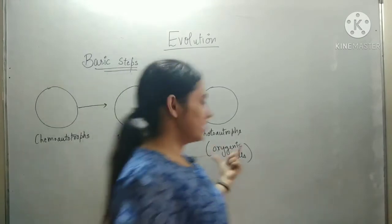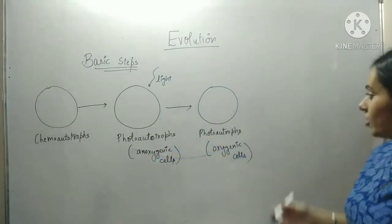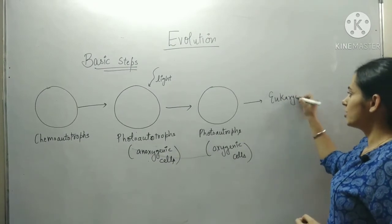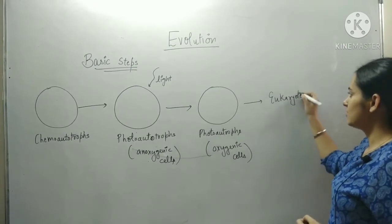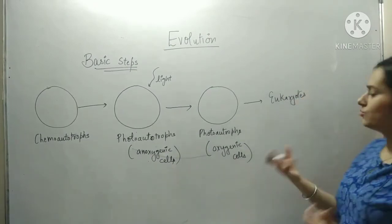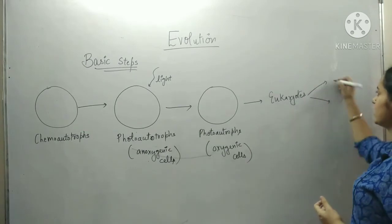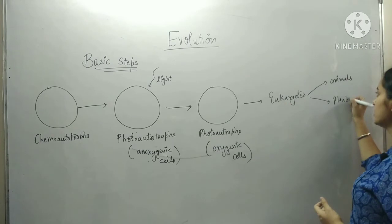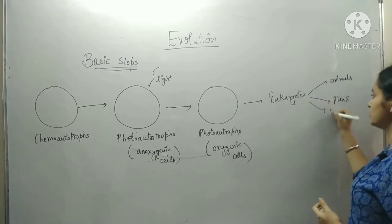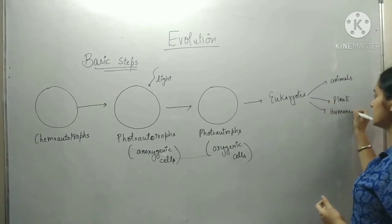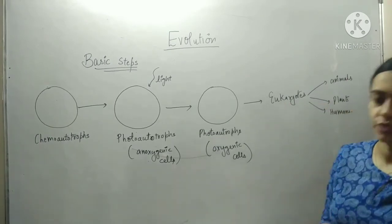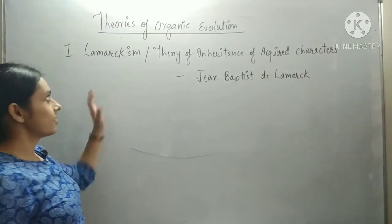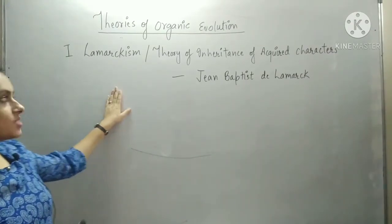These cells evolved further and we have eukaryotes. So prokaryotes evolved first and then eukaryotes appeared. Under eukaryotes you can study different organisms such as animals, plants, and humans. This describes the evolution of different cells.